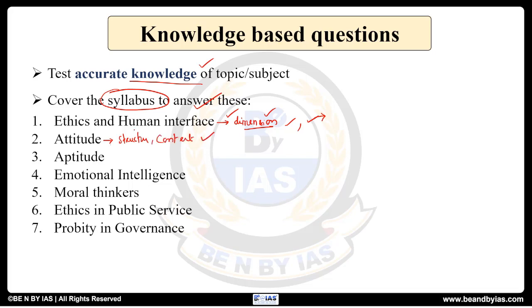Next comes attitude. Here also we go with the structure, the content, and functions of attitude. This is also once again the core subject which helps us in dealing with some situations. The aptitude and foundational values for civil services, so this is where we learn a lot of values like what is integrity, honesty, impartiality, objectivity.